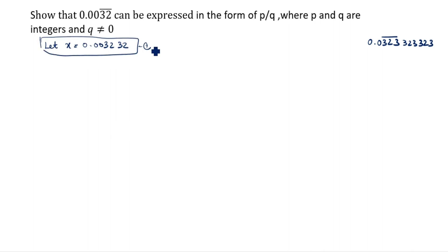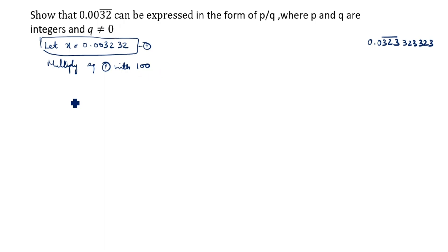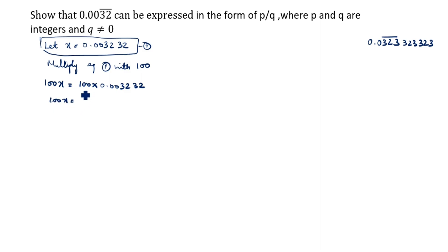Multiply equation 1 by 100. We use 100 because only two digits are under the bar, so we write two zeros. 100x equals 100 into x, which is 0.003232, giving us 0.3232. This is the second equation.